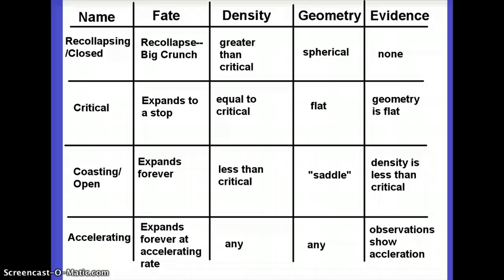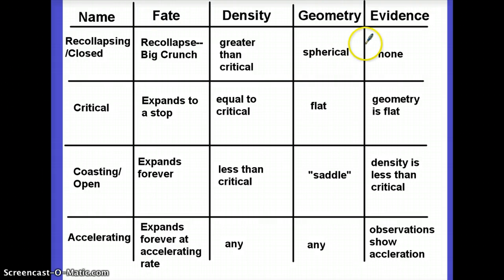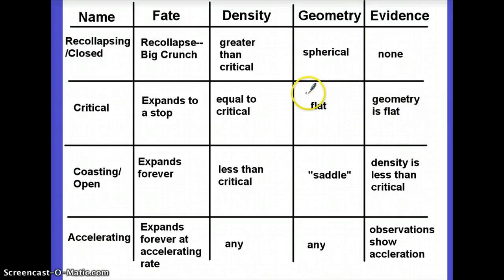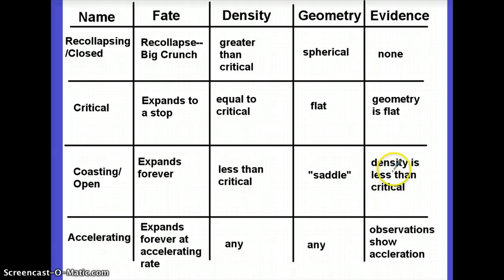So what does our evidence tell us? We don't have any evidence in favor of a re-collapsing universe — the density is not greater than the critical density, and the geometry is not spherical. We know the geometry appears to be flat, which suggests we live in a critical universe where we will eventually expand to a stop. But the density of the universe turns out to be less than the critical density, which would suggest we live in a coasting or open universe.